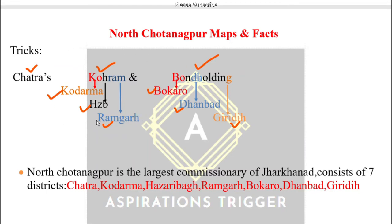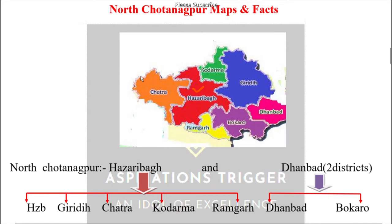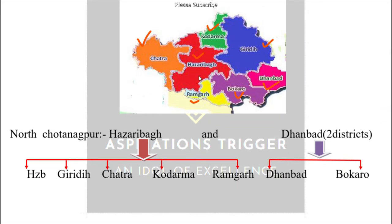So here we have seven districts which come under North Chhota Nagpur: Chatra, Koderma, Hazaribagh, Ramgarh — from 'Chatra's Kohram' — and Bokaro, Dhanbad, Giridih from 'Bond Holding.' Looking at the map: starting from Chatra in the west, going through Koderma, Hazaribagh, Ramgarh, and then Bokaro, Dhanbad, and Giridih. These are the seven districts under the North Chhota Nagpur division, which is the largest division of Jharkhand area-wise, with its headquarters at Hazaribagh.